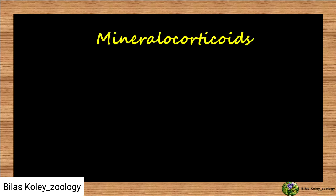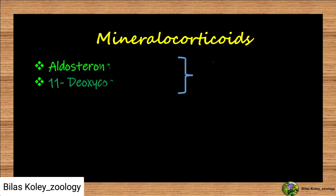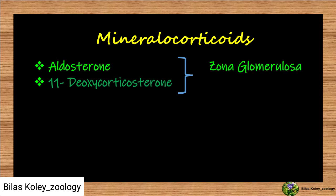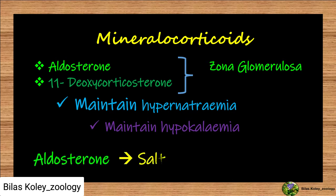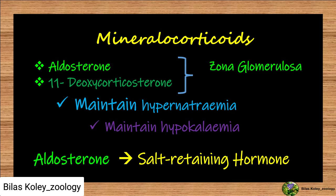Mineralocorticoids include aldosterone and 11-deoxycorticosterone. These are secreted by the zona glomerulosa of the adrenal cortex. Their secretion is stimulated by a decrease in sodium level or an increase in potassium level in the blood. Secretion of aldosterone is also stimulated by ACTH and angiotensin. Mineralocorticoids maintain high sodium levels in blood and low potassium levels in blood by increasing sodium reabsorption from the nephric filtrate and decreasing loss of sodium in sweat.